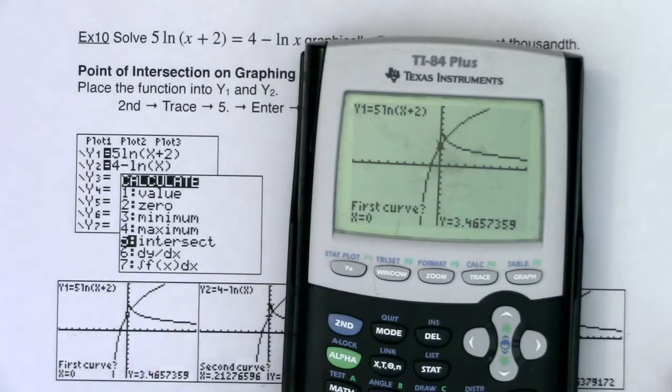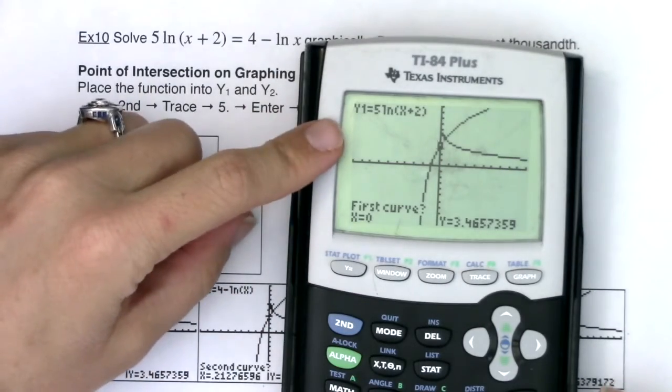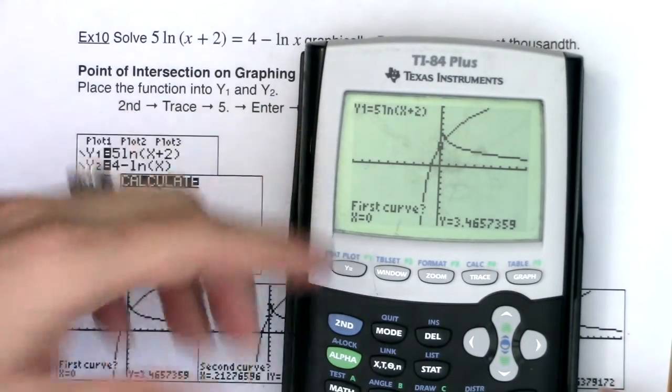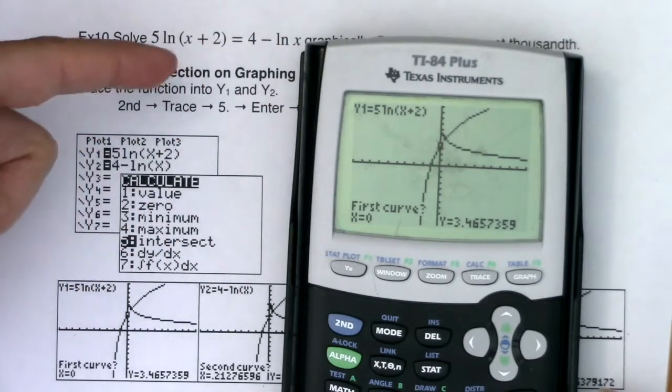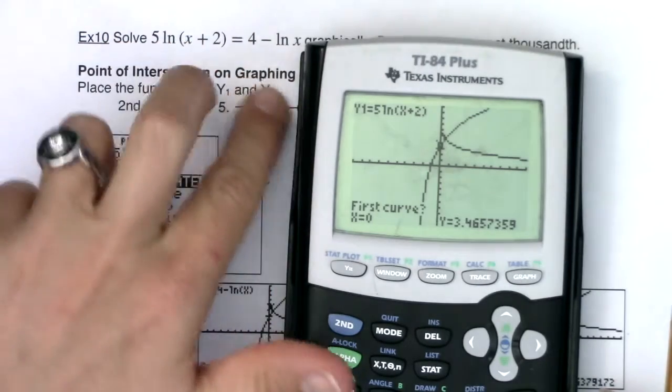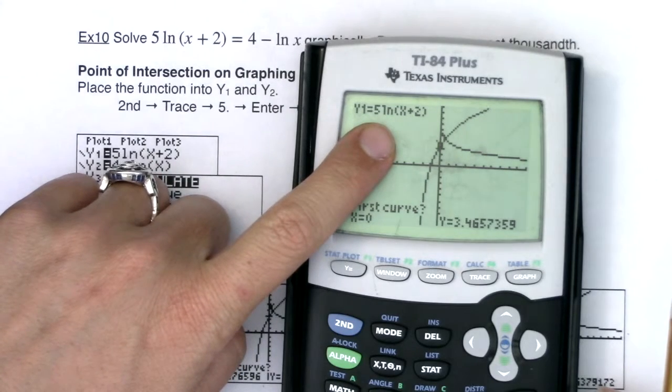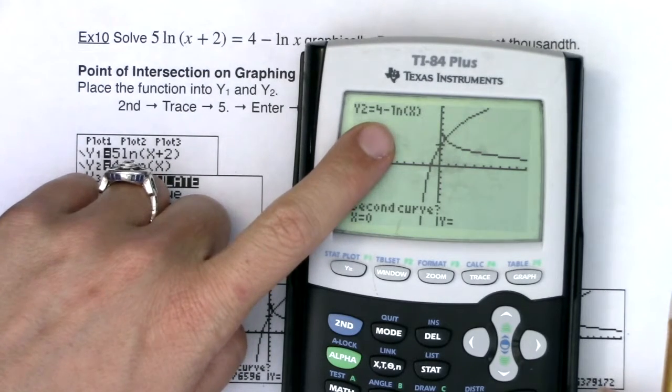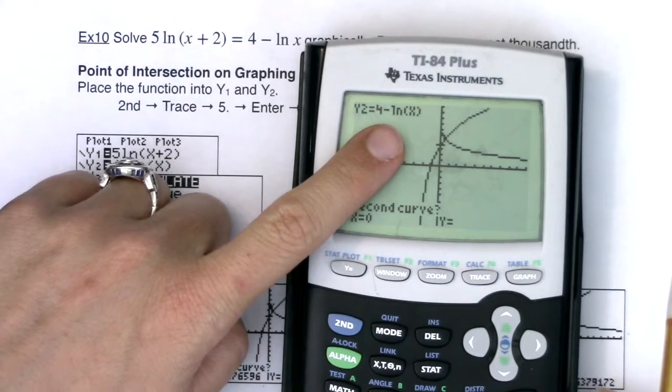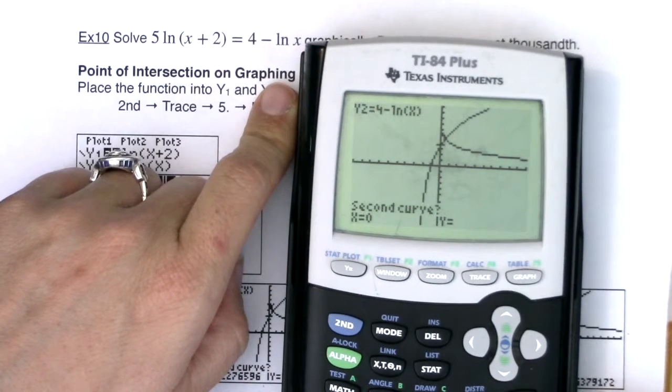Now your calculator will prompt you, which curves do you want? We only have two curves right now. We only have something in y1 and y2. So your calculator will reference that. Would you like one of the curves to be y1? I'll hit enter. Yes. Would you like the other curve to be y2? Sure. Those are the two I'm interested in.